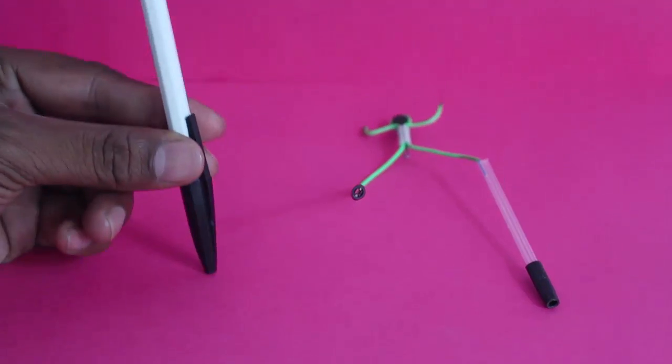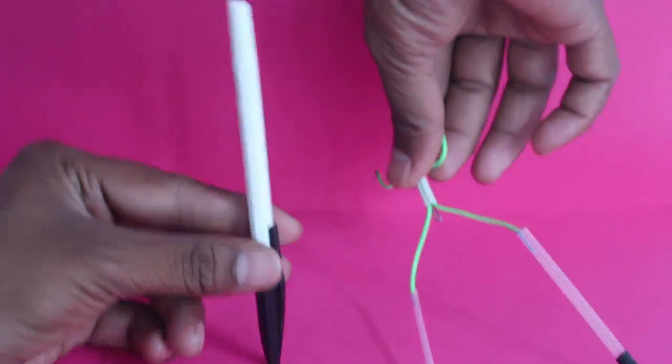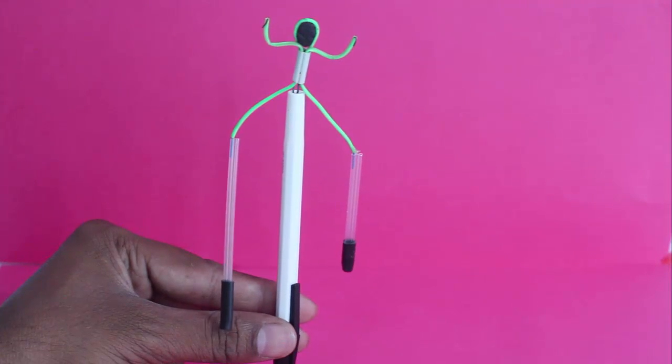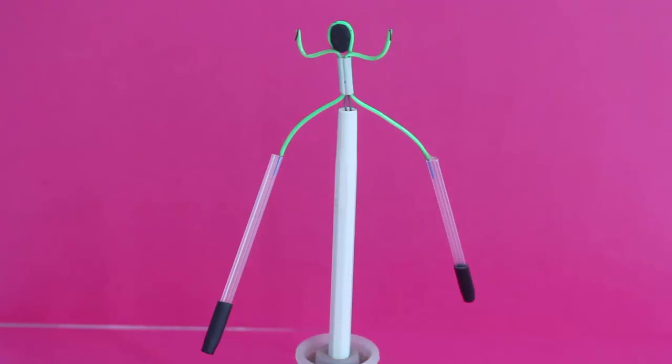Now balance the wireman on the dent at the back of a ballpoint pen. It balances beautifully, but you are in for a surprise.